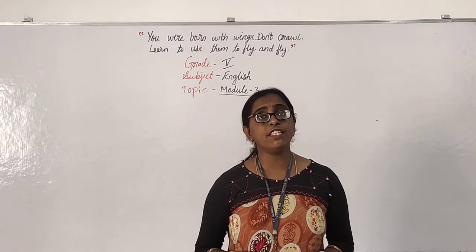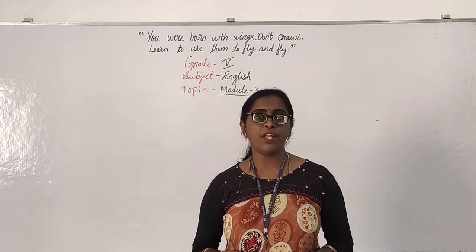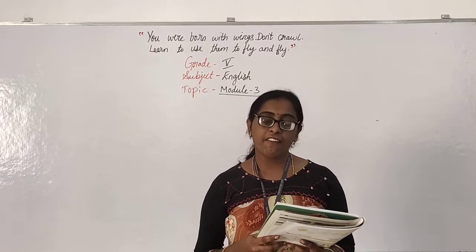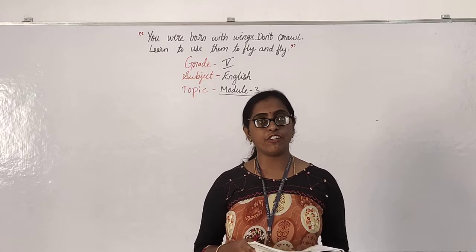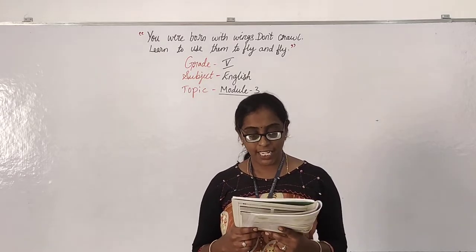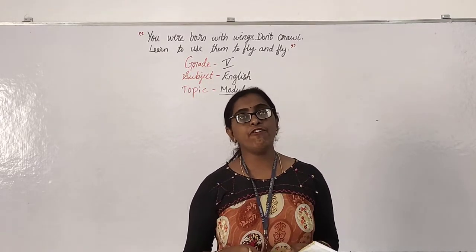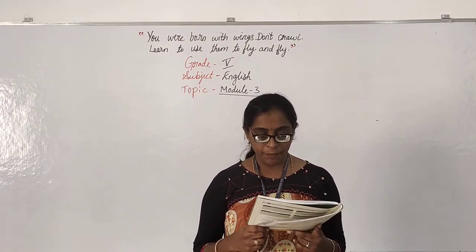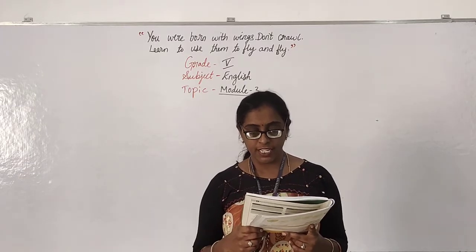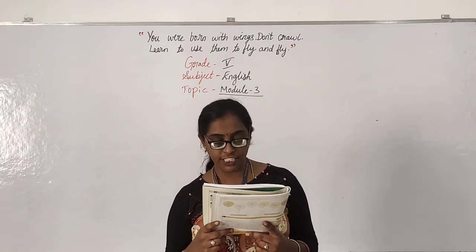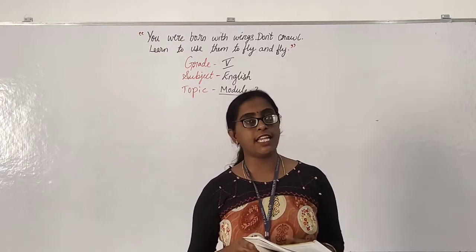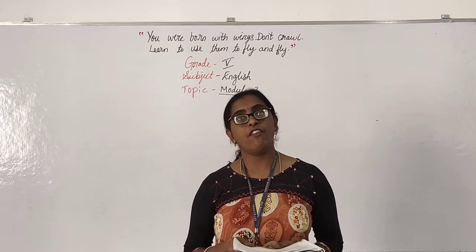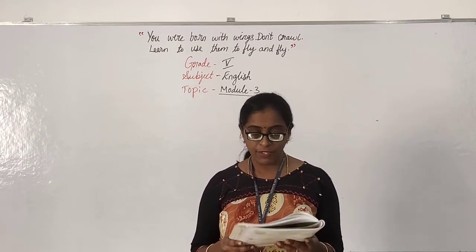For words ending with F or FE, we remove F or FE and add VES. For example: life/knives, thief/thieves. But for some words like roof and chief, we just add S — roof/roofs, chief/chiefs. No need to add IES for those.